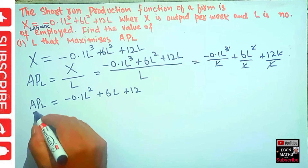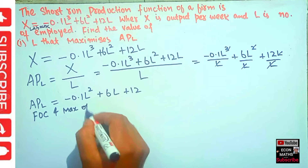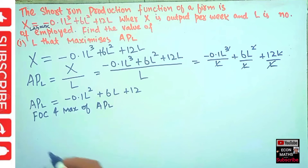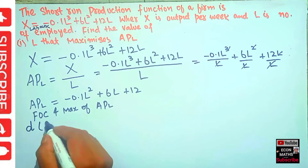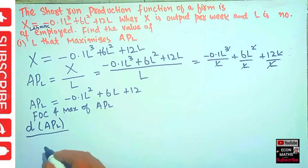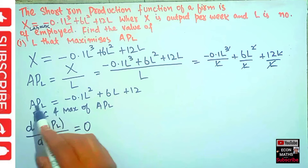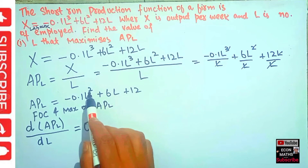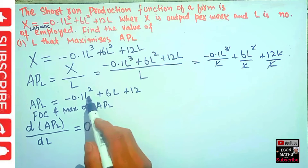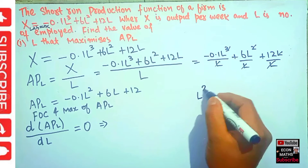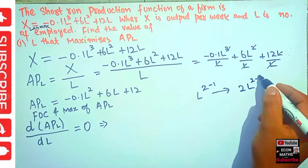Now, the first order condition for maximization of APL requires that the derivative of the average product of labor with respect to L should be equal to zero. That means we differentiate the APL with respect to L and set it equal to zero. The derivative of L squared by the power function rule: the exponent 2 becomes the coefficient, giving us 2L.